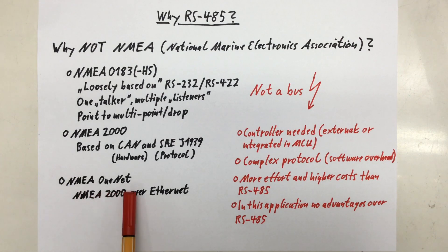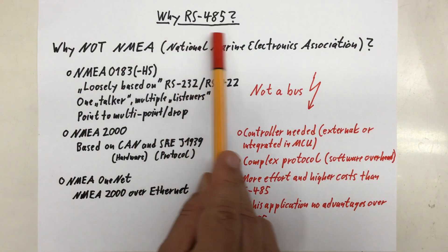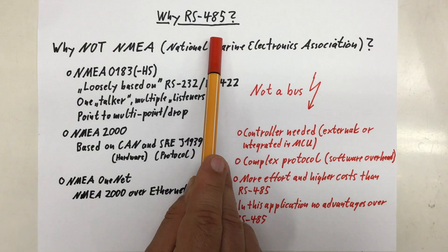Finally, we have NMEA OneNet, which is really just NMEA 2000 over Ethernet. You don't really expect me to install an Ethernet switch on my dingy, do you? Anyway, all this really just left me with RS485 as a viable option.